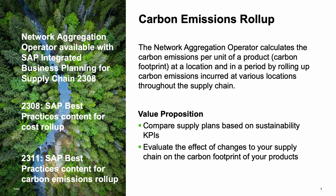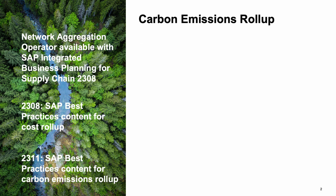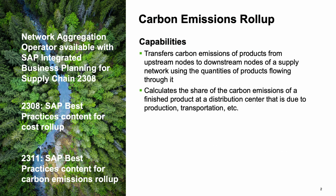You'll see how changes to your supply chain affect the carbon footprint of your products. How does it work? The operator first transfers the carbon emission values of your products from the upstream to the downstream nodes of your supply network, based on the product quantities moving through your network. Then it calculates which share of the carbon emissions of a finished product at a given location comes from processes like production, transportation, and so on.